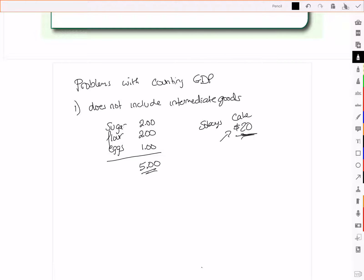So when we look at counting GDP, remember GDP is the total value of all final goods and services produced in a country in a specific period of time, typically a year.